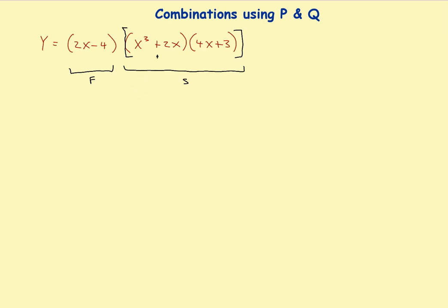So that gives me this. Within that, this is going to be a first function, and this is going to be a second function — the product rule inside the product rule. To start, I'll work with the black ones first. Y prime would be equal to, just looking at these two black ones, it's the first times the derivative of the second. So the original first would be 2x minus 4, times the derivative of the second. Now I'm going to go ahead and put those brackets back in.